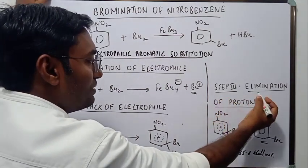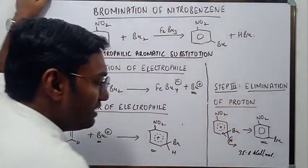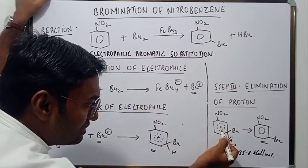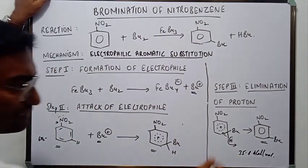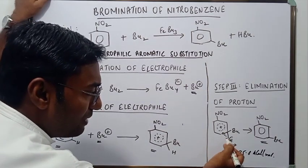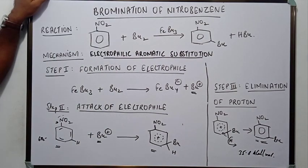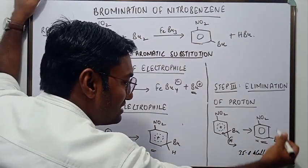In the third step what happens? Proton gets eliminated. And this pair of electrons is restored back into the benzene ring. When this is restored back, when this is retained back, the benzene attains resonance as it was before. And the product becomes stabilized by resonance.